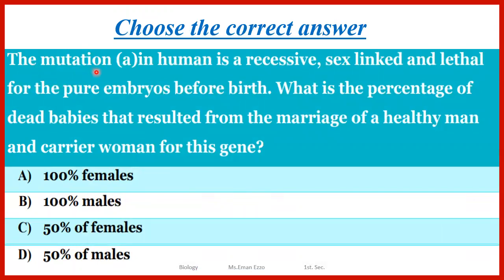The next question: mutation A in humans is a recessive sex-linked and lethal for pure embryos before birth. What is the percentage of dead babies resulting from the marriage of a healthy man and a carrier woman for this gene? Carrier woman means she has the mutant gene on one of her two X chromosomes. Let's work through it: crossing a healthy man (XY) — no lethal gene — with a female carrier.